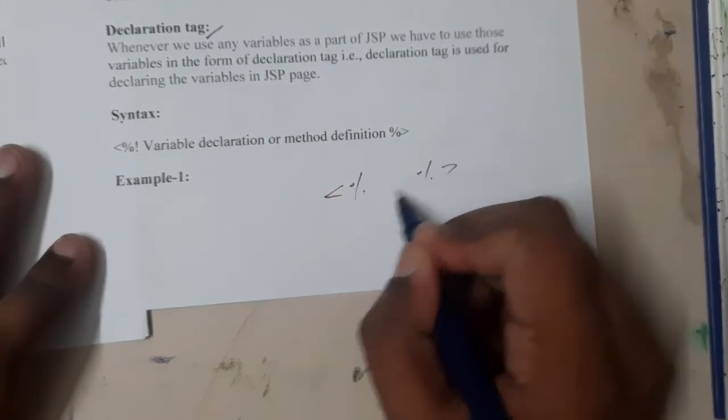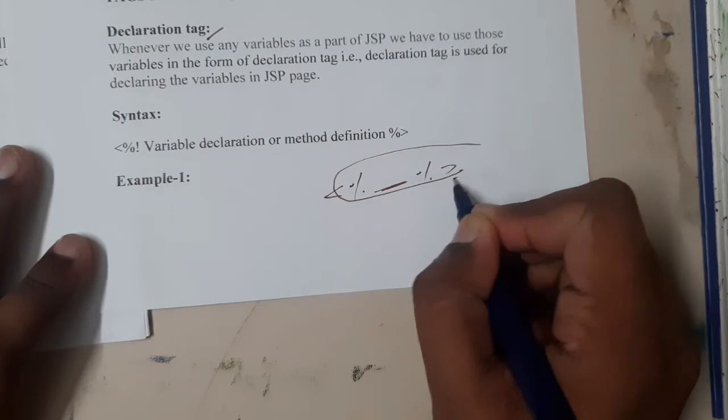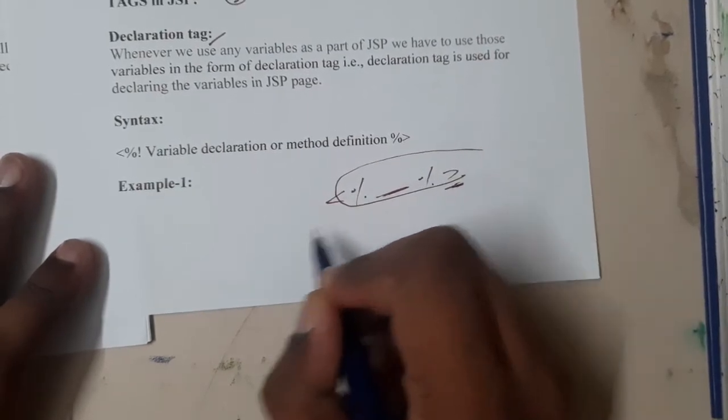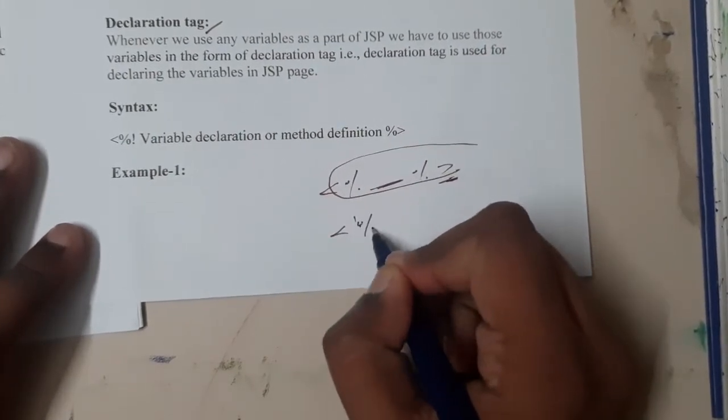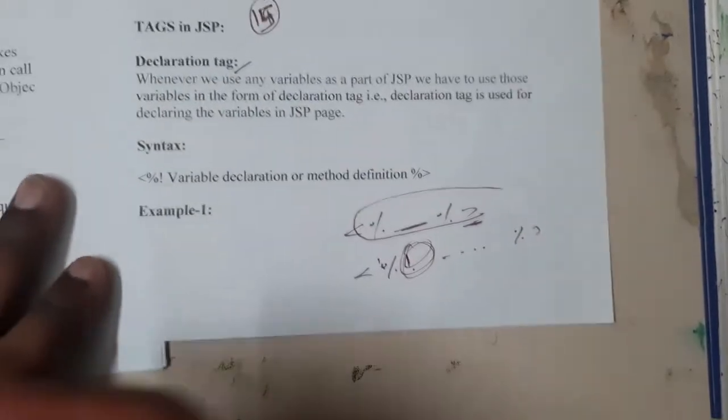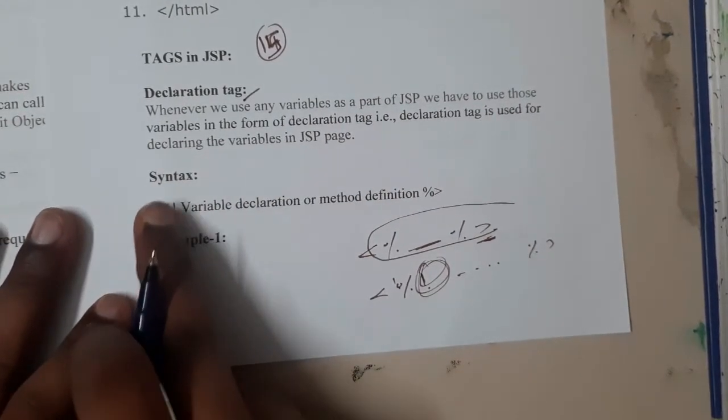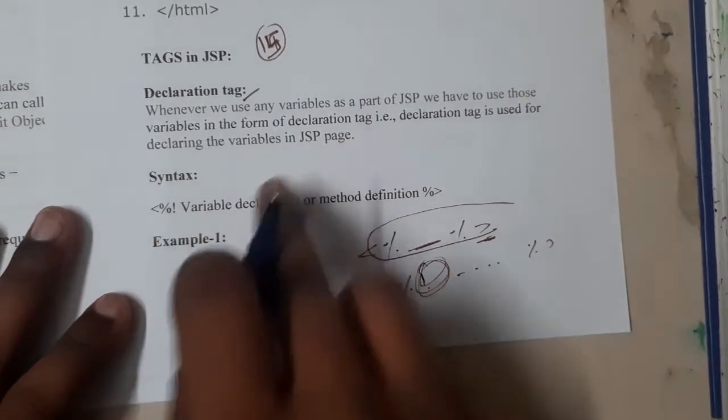If you want to define int a equal to 10, you cannot directly write it in a normal tag. If you are declaring variables, it is mandatory to write an exclamatory mark, so it indicates that you are declaring variables in the declaration tag of JSP.